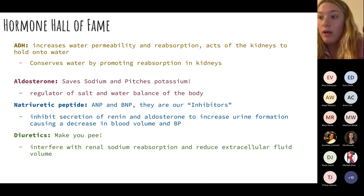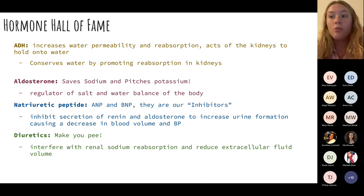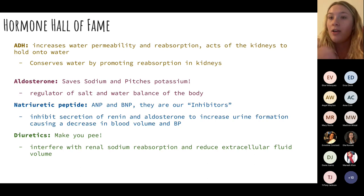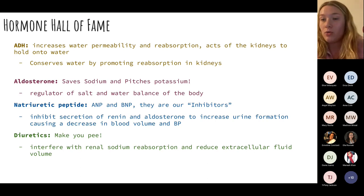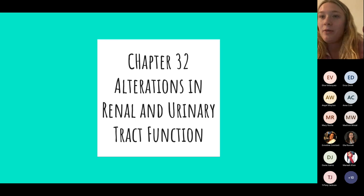If blood pressure was really low and renin and aldosterone came to save the day and blood pressure went up, ANP and BNP are released to inhibit all of that action and stop us from becoming hypertensive. Diuretics simply help us excrete fluids.